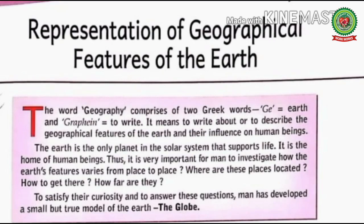Greek is the language of the people of Greece. Geography means to write about or to describe the geographical features of the earth and their influence — means effect — on human beings. The earth is the only planet in the solar system — meaning the sun and the group of planets that move around it — that supports life. It is the home of human beings. Thus, it is very important for man to investigate — means inspect — how the earth's features vary — means differ — from place to place.